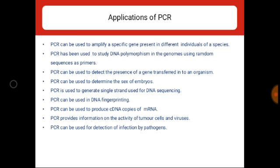Applications of PCR: PCR can be used to amplify a specific gene present in different individuals of a species. PCR has been used to study DNA polymorphisms in the genome using random sequences as primers. PCR can detect the presence of a gene transferred into an organelle, is used in DNA fingerprinting, can produce cDNA copies of mRNA, provides information on the activity of tumor cells and viruses, and can be used for detection of infection by pathogens.